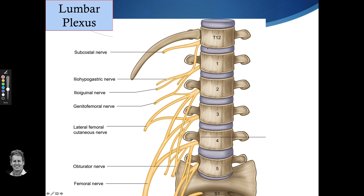The lumbar plexus comes from the primary rami of T12, forming the subcostal nerve, but it's mainly L1, L2, L3, and also L4 — mainly the lumbar spine, hence the word lumbar nerve plexus.